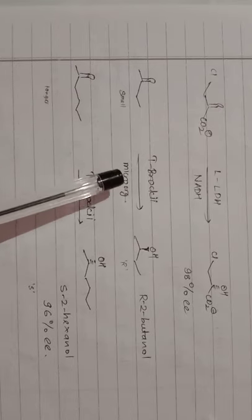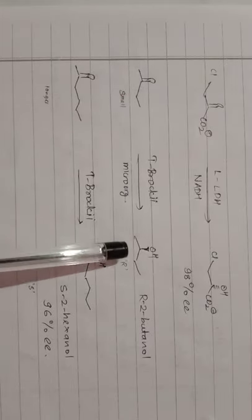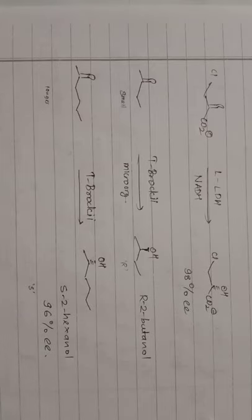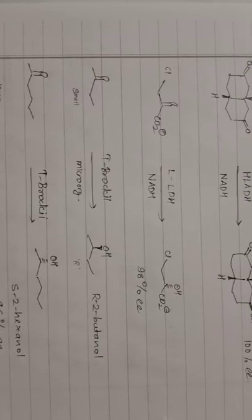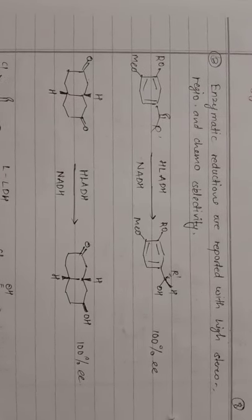Further examples: HLADH reduces another ketone to –OH with 98% enantiomeric excess. In another case, two molecules with different side chain lengths are treated with the microorganism Trigonopsis variabilis (T. variabilis). The molecule with a small side chain gives R-2-butanol, and the molecule with a longer side chain gives S-2-hexanol with 96% enantiomeric excess. These stereoselective and chemoselective products demonstrate biocatalysts secreted by microorganisms.